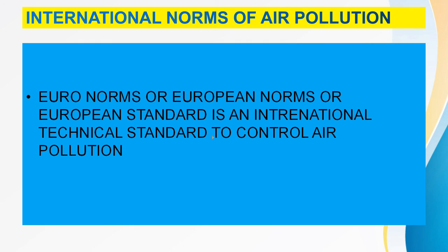To reduce air pollution which occurs due to commercial, industrial, and domestic activities, international norms of air pollution have been set up — like Euro norms. Euro norms, or European norms, or European standard, is an international technical standard to control air pollution. It sets emission standards, which are the legal requirements governing air pollutants released into the atmosphere. Emission standards set quantitative limits on the permissible amount of specific air pollutants that may be released from a specific source over specific time frames. This emission standard is very much required to control air quality and to protect human life and other life on earth.